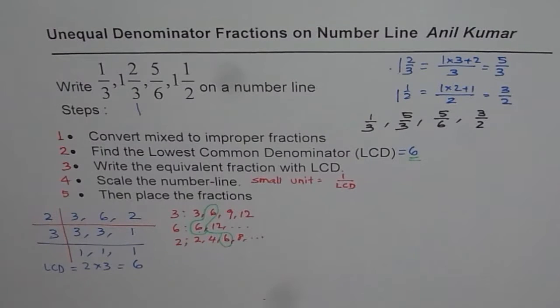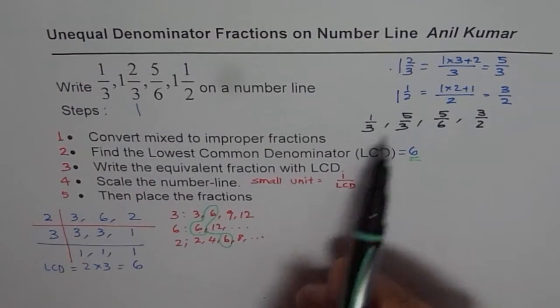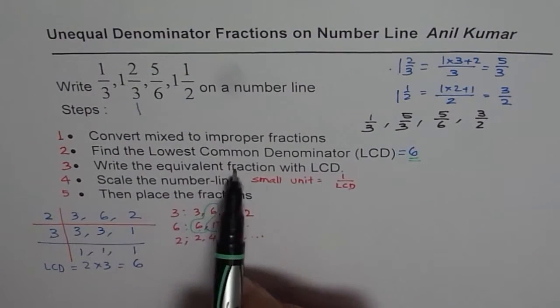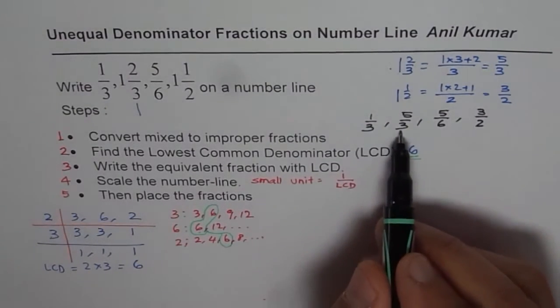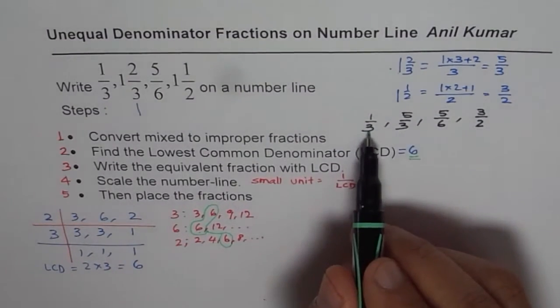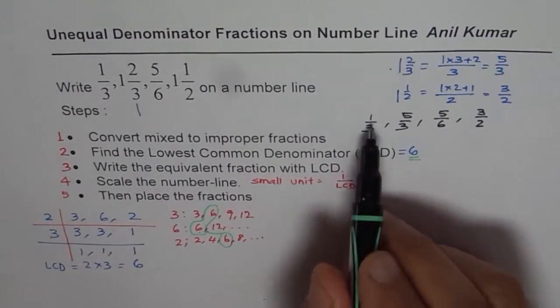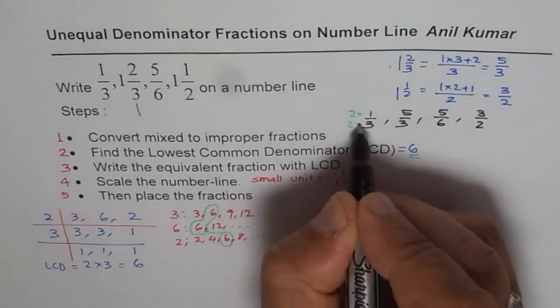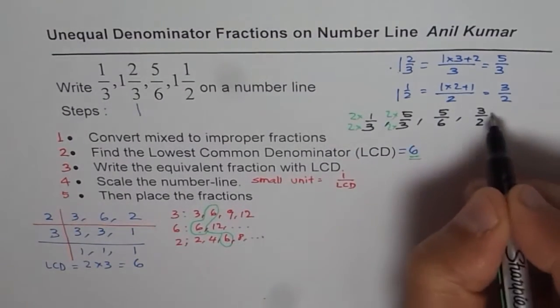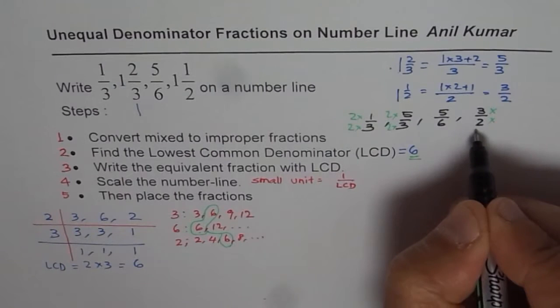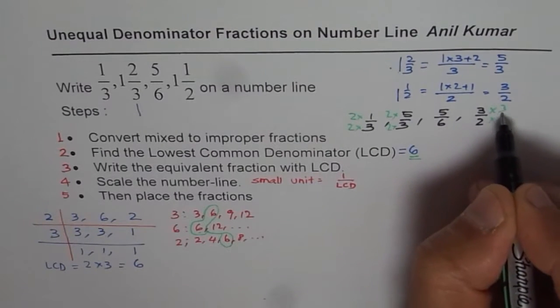Once you have found lowest common denominator, you need to write each fraction as equivalent fraction with lowest common denominator. Now here the denominator is 3, 3, 6 and 2. So you have to convert 3 to 6. How can you do it? You need to multiply these by 2. 2 times 3 is 6. Here also multiply by 2. Here it is okay. Multiply these by 2 times 3 is 6, so by 3.